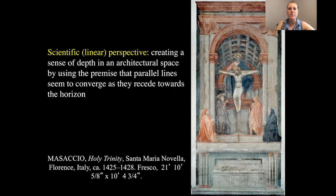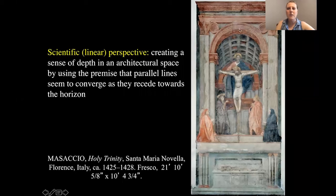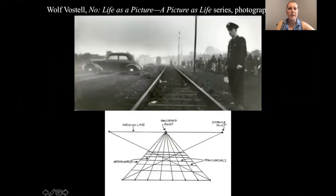This is when you use — sometimes it's an architectural space, sometimes it's outside — this premise that all parallel lines appear to converge as they recede towards a single point. Here those parallel lines are the coffers in the ceiling, and if we were to connect all of those, we would see that they all converge somewhere around Jesus Christ's body. Those parallel lines that appear to converge at a single point are called orthogonals, and you can see them here in this schematic at the bottom.